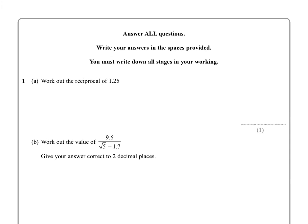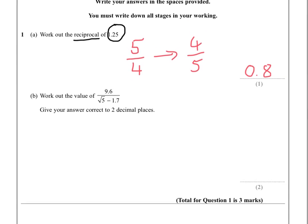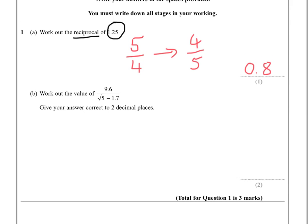Work out the reciprocal of 1.25. Now, reciprocal literally means turn a fraction upside down, so we've got to convert 1.25 into a fraction. Hopefully you know that that's 5 over 4, so I'm going to turn that upside down. 4 fifths — that could be your answer because they gave it as a decimal. I am also going to give it as a decimal. Bit of a nasty one to put at question one.